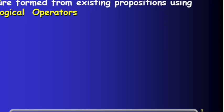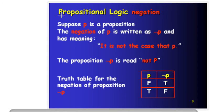New propositions are called compound propositions. These are formed from existing propositions using logical operators. When you have more than one proposition combined, it's called a compound proposition.